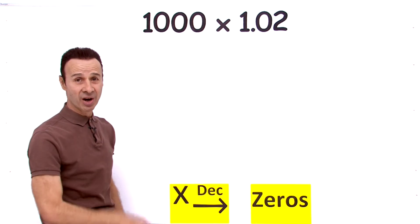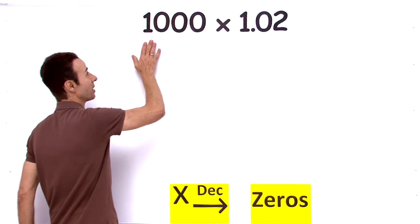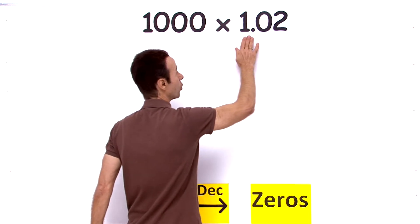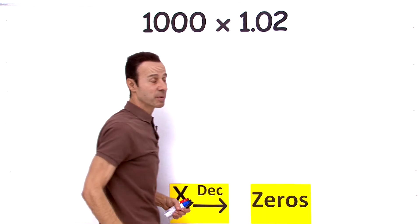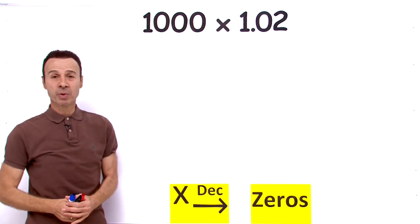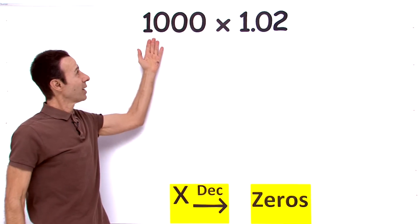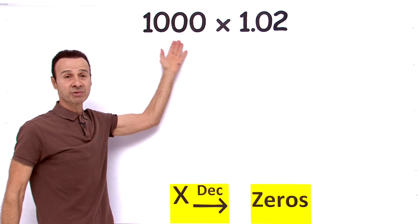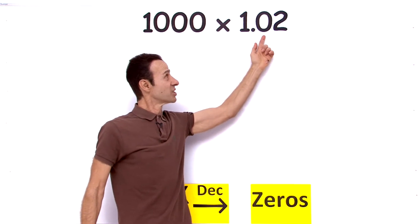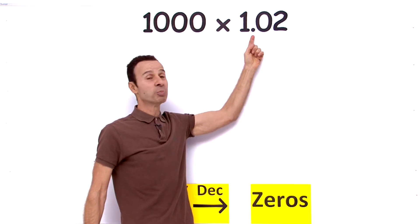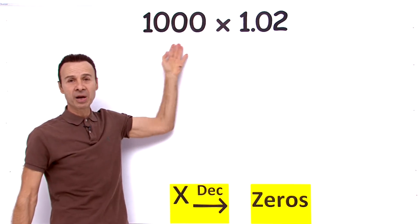Alright, let's multiply these guys. We have 1000 times 1.02. When we multiply, obviously the answer will get bigger. So 1000, the three zeros there, times 1.02. Now where does that decimal point move if we multiply by 1000? Well, there is a rule of thumb.